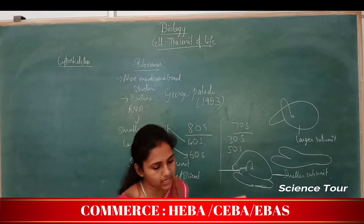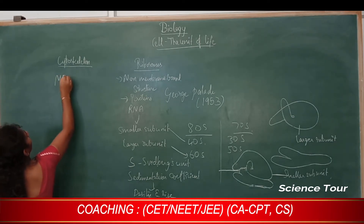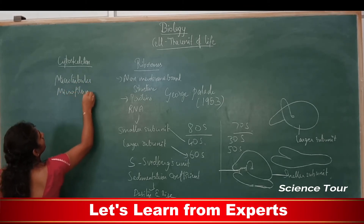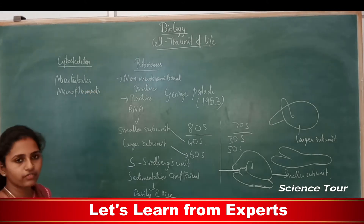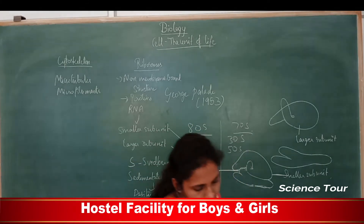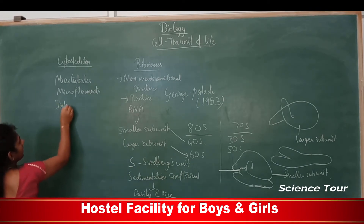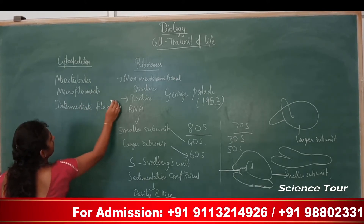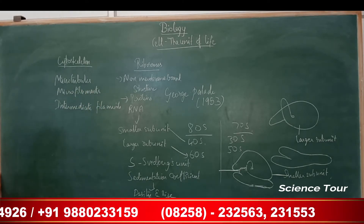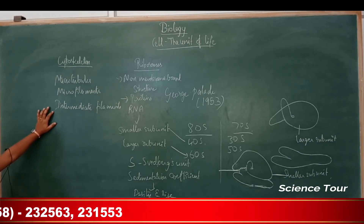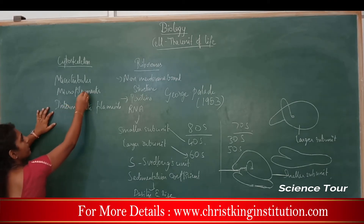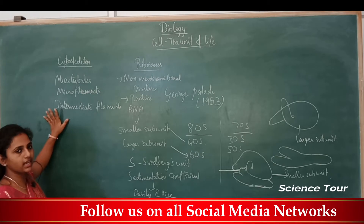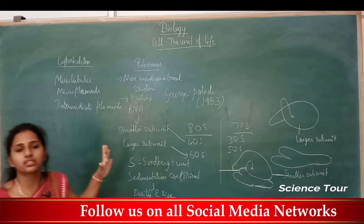The cytoskeleton consists of three main parts: microtubules, microfilaments, and intermediate filaments. These are all proteinaceous filaments that give a skeletal structure providing extra support to the cell.